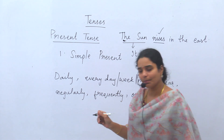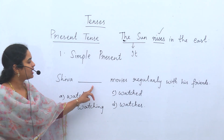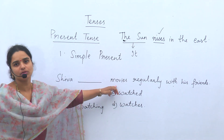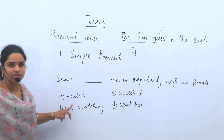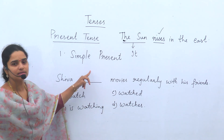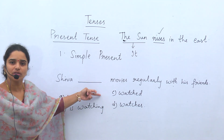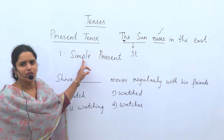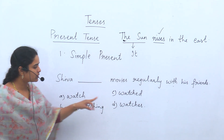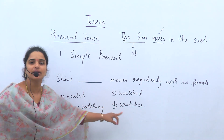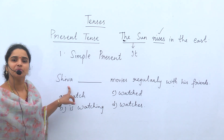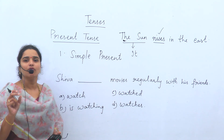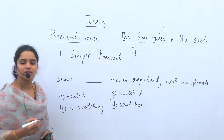Now let us discuss some examples. 'Shiva ___ movies regularly with his friends.' With four options as answers — the clue word here is 'regularly', which means frequently. It is a clue word to identify the sentence as simple present tense. So in simple present tense we use V1. The verb here is 'watch'. Depends on the subject — who is the subject? Shiva. Shiva is the third person, so we have to use 'watches'. So the answer is: 'Shiva watches movies regularly with his friends.'